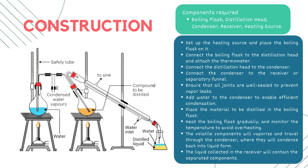One more important component is the heating source, which can be a Bunsen burner, a hot plate, or any other heat source that provides controlled heating to the boiling flask. To assemble the setup, we begin by setting up the heating source and positioning the boiling flask on it, then connect the boiling flask to the distillation head and secure it in place — don't forget to attach the thermometer. Extend the setup by connecting the distillation head to the condenser, and ensure all joints are tightly sealed to prevent any unwanted vapor leaks.